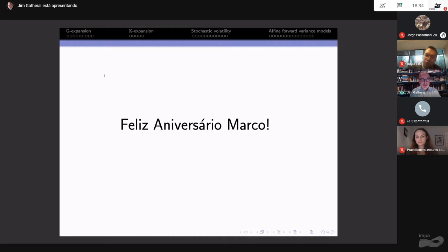Here's a brief outline of my talk. First, I'll define the Diamond product, which you should be familiar with from two years ago. Then I'll present the G expansion, which is like the father of the K expansion and the F expansion. F stands for forest, and that was the original expansion I presented two years ago.